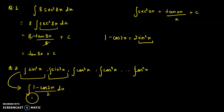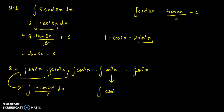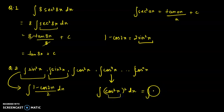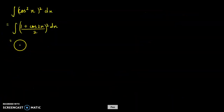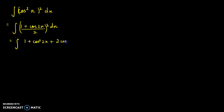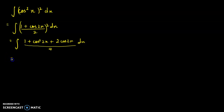For cos⁴x, write it as (cos²x)². Then substitute cos²x = (1 + cos 2x)/2. So you integrate [(1 + cos 2x)/2]² dx. Expand it: integration of (1 + cos²2x + 2 cos 2x)/4 dx. The 1/4 is a constant and comes out: integration of (1 + cos²2x + 2 cos 2x) dx.